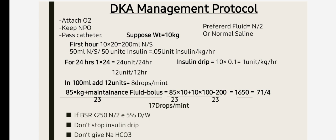For the secondary preferred fluid, use half normal saline or normal saline. You can make half normal saline by mixing 250 ml of normal saline with 250 ml of distilled water to make 500 ml. For the fluid calculation formula, use the constant 85 multiplied by the weight in kg, plus maintenance for the first 10 kg at 100 ml per kg, minus the bolus, divided by 23.